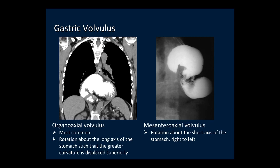There are two types of gastric volvulus. Organoaxial, the most common, involves rotation about the long axis of the stomach from the GE junction to the pylorus, displacing the greater curvature superior to the lesser curvature. Mesenteroaxial volvulus is rotation about the short axis connecting the lesser and greater curvature, with rotation generally from right to left creating a twist in the body of the stomach. In this example, we can see the twist in the mid-portion and rotation of the antrum into a large hiatal hernia.